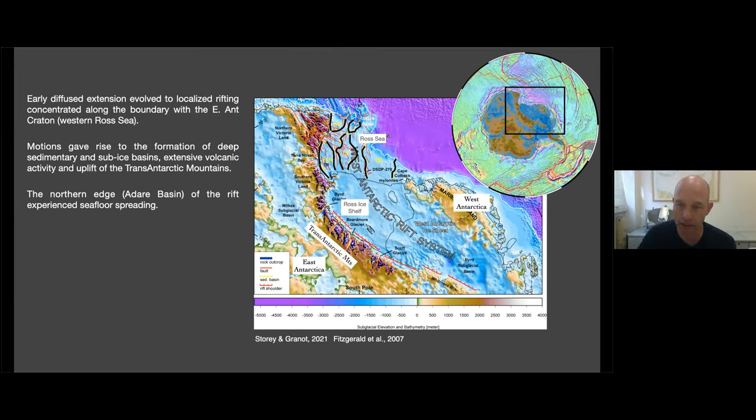So the early phase of rifting involved diffuse deformation, which has been localized in the latest stages to the western side of the Ross Sea and along the Trans-Antarctic Mountains. Rifting created these deep sedimentary basins and sub-ice basins and troughs. It also created extensive volcanic activity and resulted in the uplift of the Trans-Antarctic Mountains.